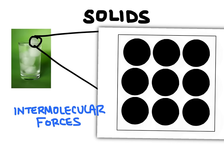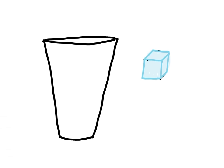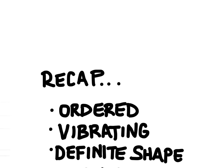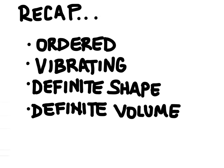The particles in the solid chunk of ice are in a nice ordered pattern — we call this a crystal structure, or a crystalline structure, which means there's a nice pattern to the way they're organized. Solids also have a definite shape. If we drop an ice cube into a glass of water, it's going to retain its shape and still look like an ice cube. The volume is also definite — we could measure the height, length, and width and calculate its volume, which stays the same. To recap: particles in solids have a nice ordered pattern, they vibrate slowly with a small amount of kinetic energy, and they have a definite shape and a definite volume.